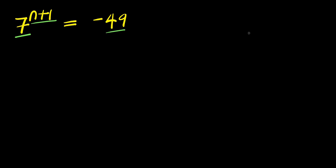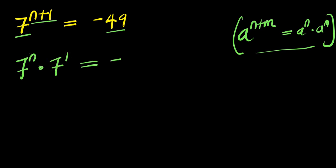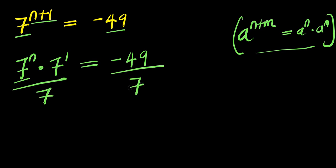If you have a to the power of n plus m, this equals a to the power of n times a to the power of m. We are going to use this identity, so we have 7 to the power of n times 7 to the power of 1 equals negative 49. Now I can isolate 7 to the power of n by dividing both sides by 7, giving 7 to the power of n equals negative 49 divided by 7, which equals negative 7.